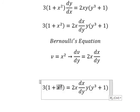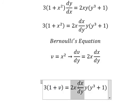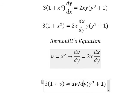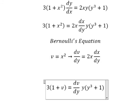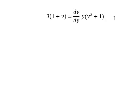This one we change for v, this one we change for dv over dy. Next, 1 plus v will go to the right, and y times y to the power of 3 plus 1 will go to the left.